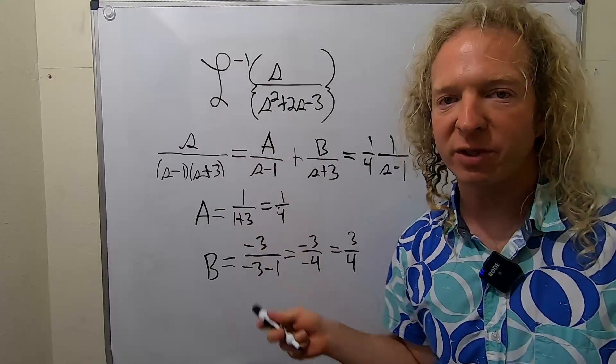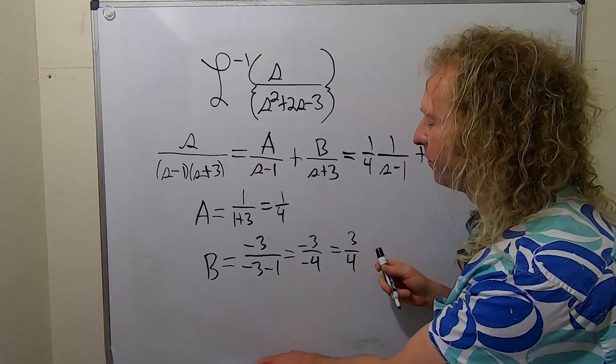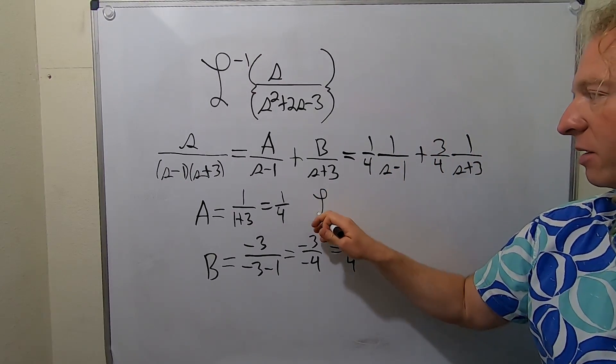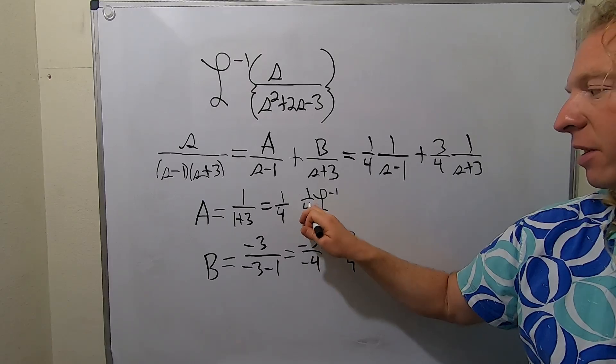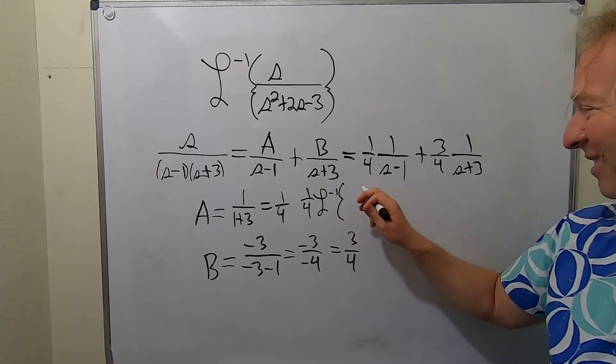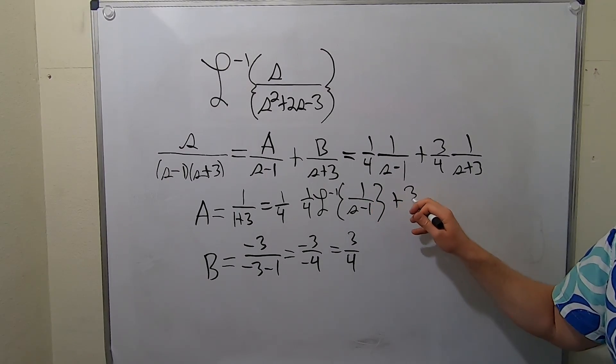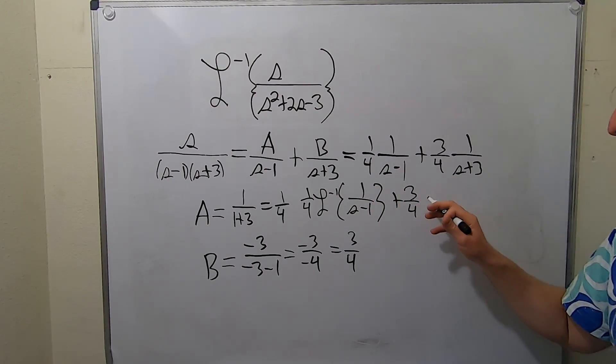All right, so this is what we have to find the inverse Laplace of, right? So you just take the inverse Laplace of each piece because it's linear. So we have inverse Laplace, so one-fourth inverse Laplace. I thought I had to erase, but I don't. So good. This is 1 over s minus 1. Plus three-fourths inverse Laplace of 1 over s plus 3.